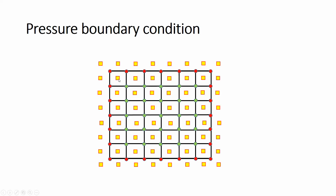For the pressure boundary condition, the exterior pressure across the wall is set equal to the interior pressure. Because U equals zero at the left and right walls — meaning no transport across the wall — there should be no pressure difference there. Similarly, V equals zero at the top and bottom walls, so there is no flow across those interfaces, and the pressure values on either side of those walls are set equal.